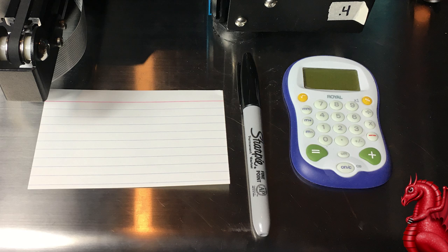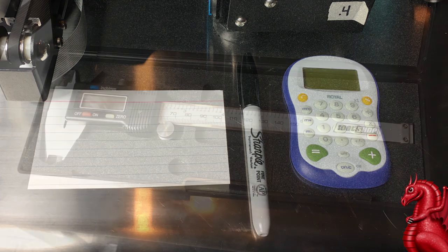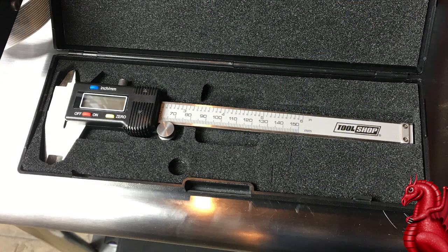In order to calibrate your e-steps you're going to need a calculator, a Sharpie marker, and a way to measure the filament. For the second part of this video when we're running calibration cubes, you are going to need a set of digital calipers. They will work for this step too, but if you don't have digital calipers and you just want to calculate your e-steps, you can do it with a steel ruler. Do not use a cloth or plastic measuring tape like you would use for sewing. Those can stretch a little bit and they are not as accurate.